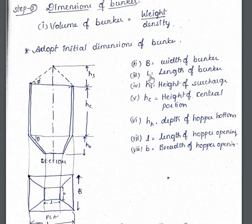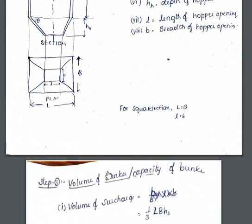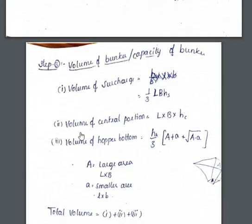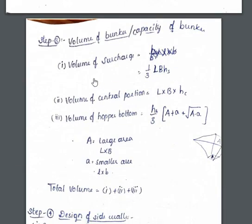The notation used: capital B represents the width of the bunker, L represents the length of the bunker, Hs represents the height of the surcharge, Hc is the height of the center portion, Hh is the height of the hopper, small l represents the length of the hopper bottom, and small b represents the breadth of the hopper opening.